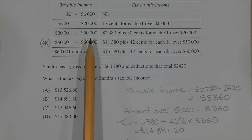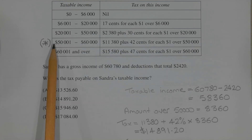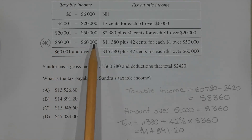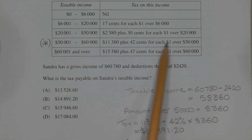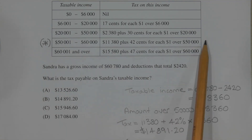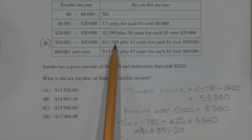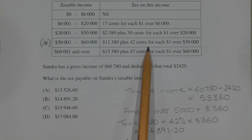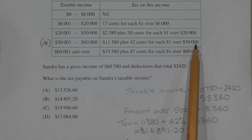Now referring to the tax table, this value here is between $50,001 and $60,000. So we will be referencing this row here of the tax table. And the tax is $11,380 plus $0.42 for each dollar over $50,000.